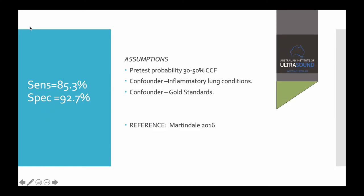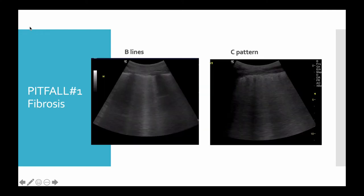With this sort of protocol, Martindale's meta-analysis said that we had a sensitivity of 85% and specificity of 92%. The big confounder is inflammatory lung conditions — we admit this, we know this. The other confounder is gold standards, because in these studies we do in the ED we cannot justify getting an echo on everybody, or can't afford it rather, and we can't justify getting a CT on everybody. The big pitfall is fibrosing or inflammatory lung conditions because they look very similar.